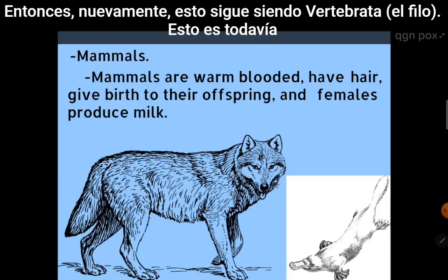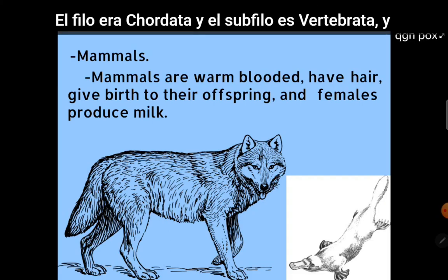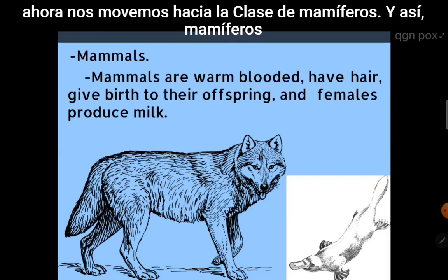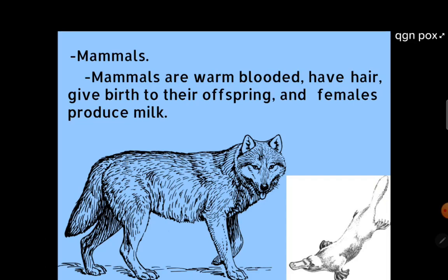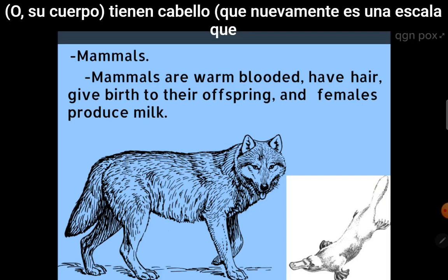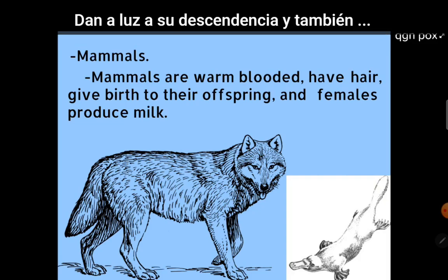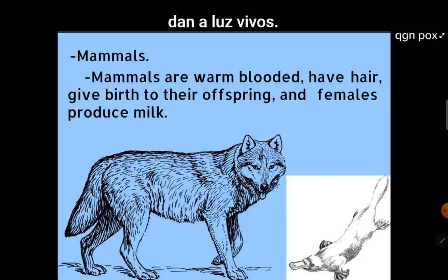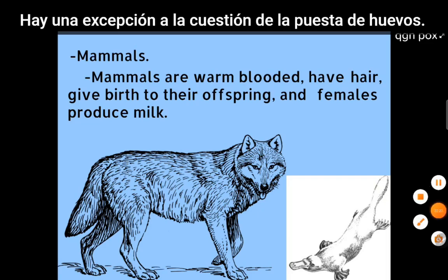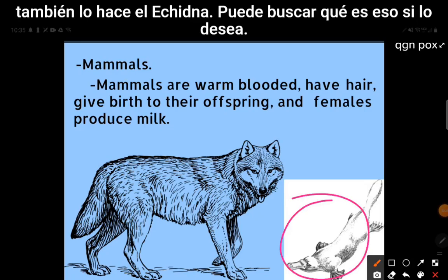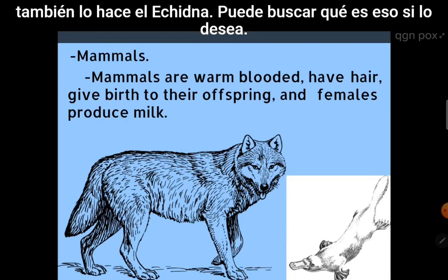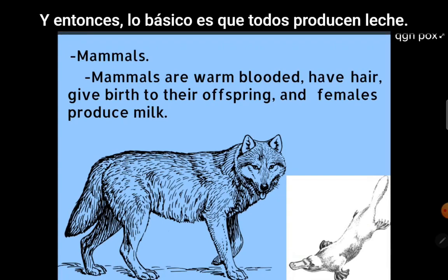Next we go to mammals. The phylum was chordata, the subphylum is vertebrata, and now we're moving down to the class of mammals. Mammals are warm-blooded endotherms. They have hair, which again is a scale that has been drawn out. They give birth to live offspring — they don't lay eggs — and they produce milk. There is one exception to the egg-laying rule: the platypus lays eggs, and so does the echidna. The basic things are they all produce milk and they're warm-blooded.